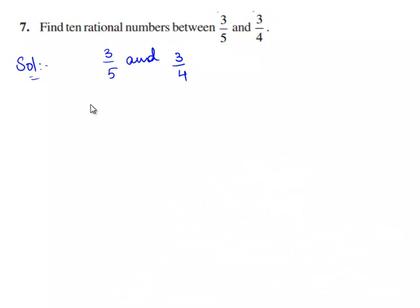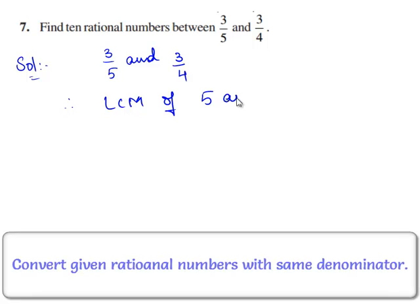Let us express these rational numbers with a common denominator. Therefore, we find LCM of 5 and 4.